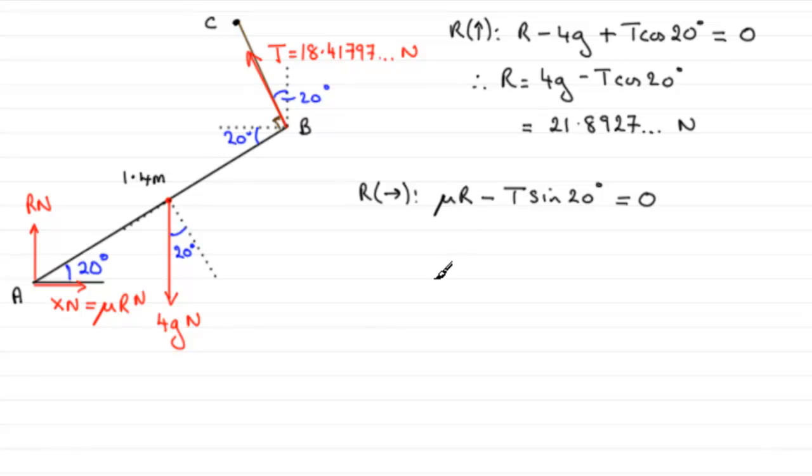So if you rearrange this for mu, you can add T sine 20 to both sides, so that will give you mu R, and then divide both sides by R. You end up with mu equaling T sine of 20 degrees, all divided by R. Well we've got R, it was up here. We've got T, it was here. If you put those values into the equation, you should find you get 0.2877 and so on.